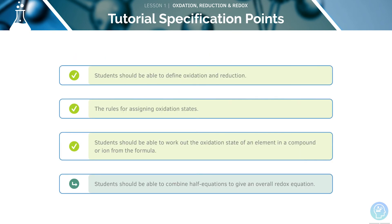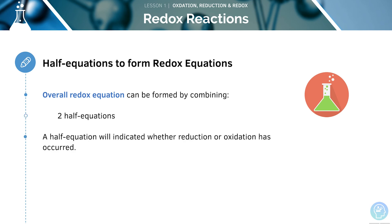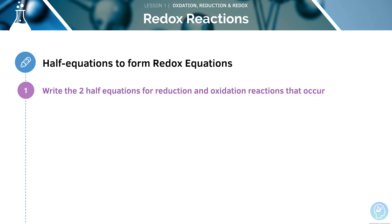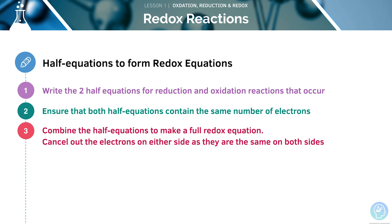Our final point is to learn how to combine half equations. You should be able to form an overall redox equation by combining two half equations. A half equation will tell you whether reduction or oxidation has taken place — for example, whether electrons have been lost or gained. The method is: first, write the two half equations for the reduction and oxidation reactions; next, ensure both half equations contain the same number of electrons; finally, combine them to make a full redox equation, and cancel out the electrons on either side.